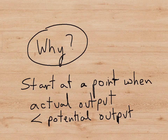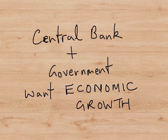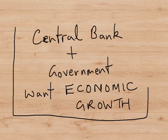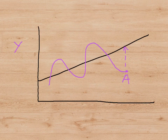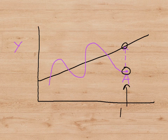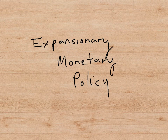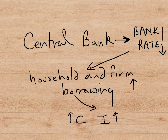To explain why it happens, let's start at a point where the actual output is below potential. In this situation, both the central bank and the government would want the economy to grow — they would want the output to increase. So, here we have a point, such as point A, where the actual output is well below the potential at that point in time. So, we start at a point where the economy is operating well below its potential. The central bank will now engage in expansionary monetary policy — they want the economy to grow, so they will use monetary policy to make that happen.